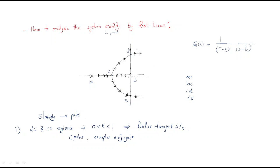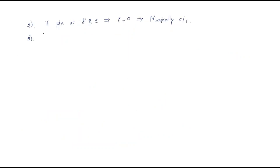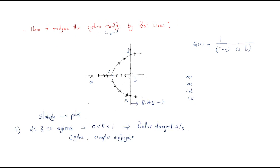Next, if poles are in the complete right-hand side (RHS) — that is, to the right of the y-axis — then the system is generally un-damped. Whenever the system is un-damped, it becomes an unstable system. If poles are in the left-hand side (LHS), we can analyze stability for the left side of the y-axis. If it is on the right-hand side, then the system is completely unstable.